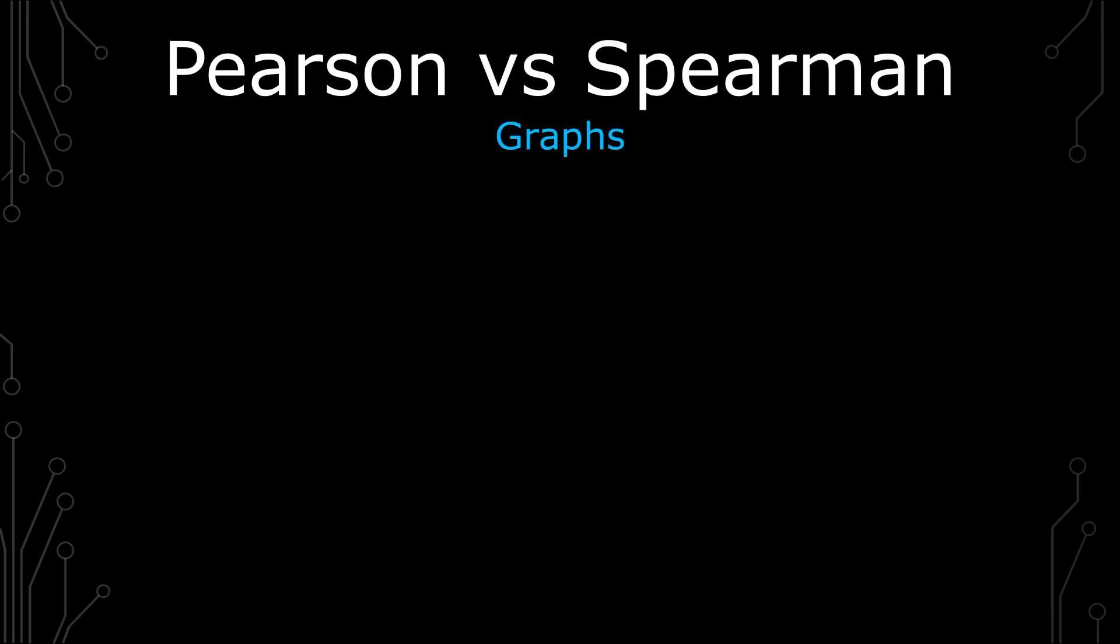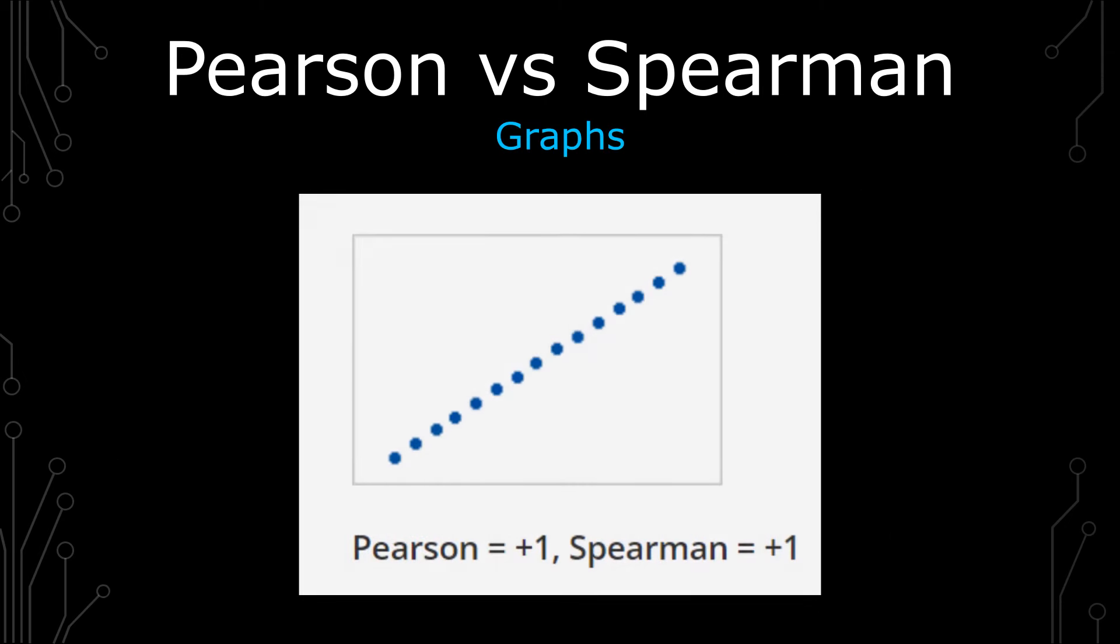In the first graph, we see what's probably the default for when people think of a linear relationship. It's a positive increasing relationship. There's both the Pearson and Spearman coefficient. And in it, there's plus one, plus one.